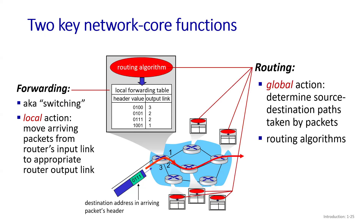The second important function in the network core is called routing. Forwarding or switching is a local function, while routing is a global function. Routing is done through routing algorithms — there are different types, such as RIP, IGRP, OSPF, and BGP. The purpose of the routing algorithm is to decide the path from source to destination.